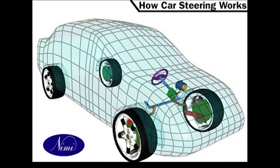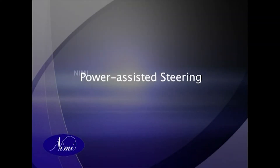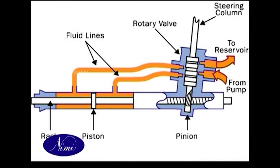Cars have independent suspension. This system has ball joints to allow the wheel movement. Power assisted steering systems use hydraulic power to help the driver turn the road wheels when the steering load exceeds normal.